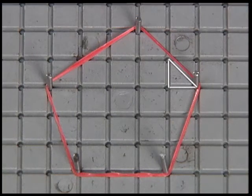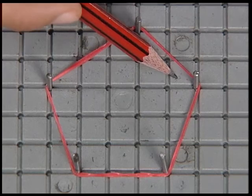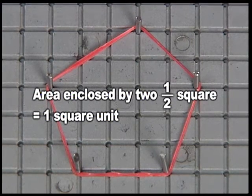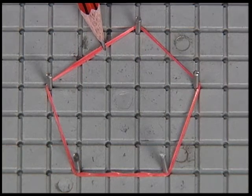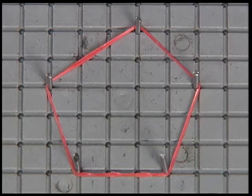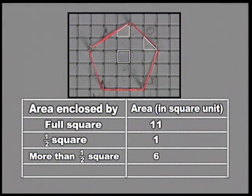Now we will take the area enclosed by each half square to be half square unit. There are just two such half squares, so the area enclosed by them will be one square unit. We neglect the area of the squares which are less than half inside the shape — there are three such squares. To find the total area, add the area enclosed by the full squares, half squares, and more than half squares.